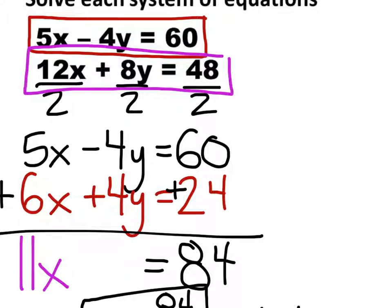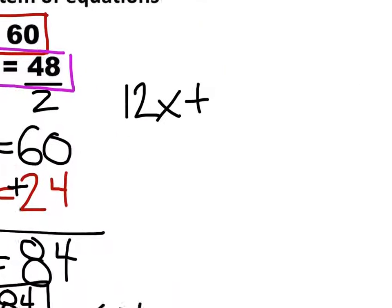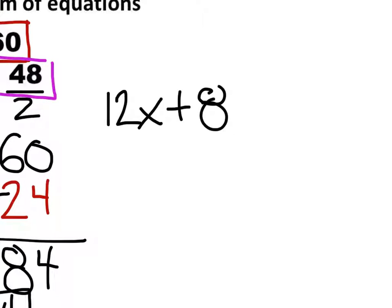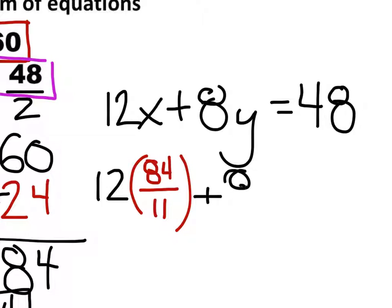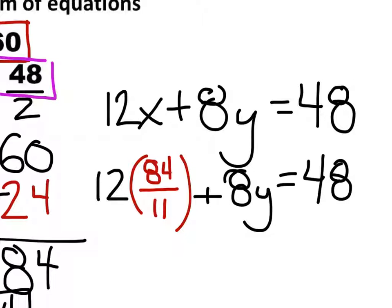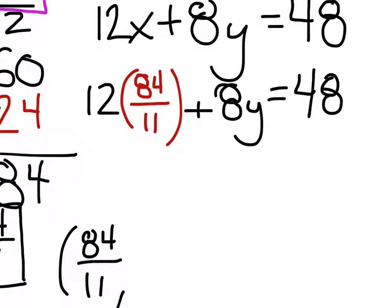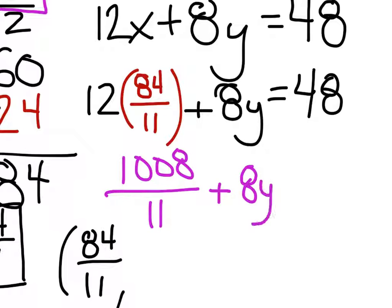Bottom one. Fair enough. So we've got 12X plus 8Y equals 48. You do need both values, but we have already found the value of X — it's 84 elevenths. So we're going to rewrite this equation and replace X with 84 elevenths, which is kind of going to be a pain, but we have calculators to make it easier. 8Y equals 48. So 12 times 84 elevenths would be some really large number — what I have here is 1,008 elevenths plus 8Y equals 48.